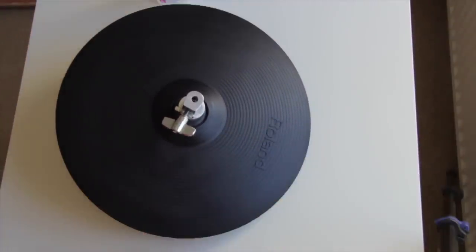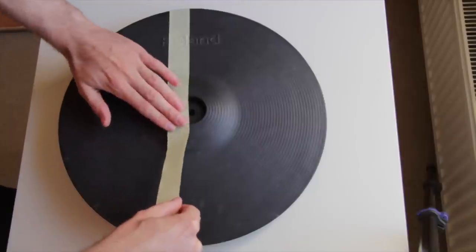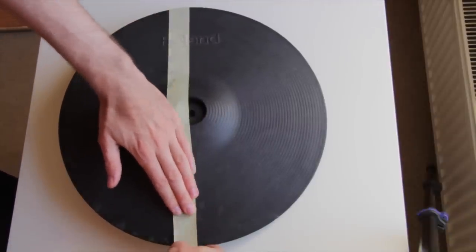That's it! It looks like new. We taped the CY15Rite symbol to show you the big difference between treated and untreated rubber.